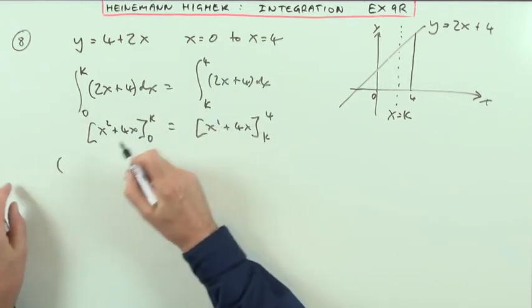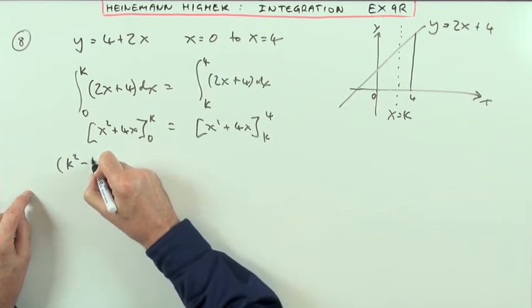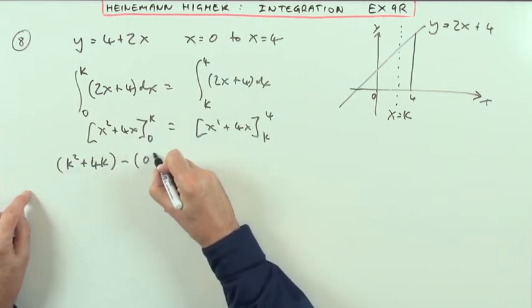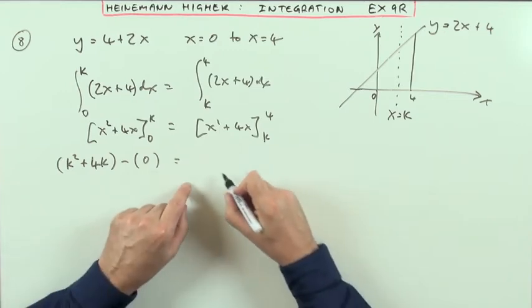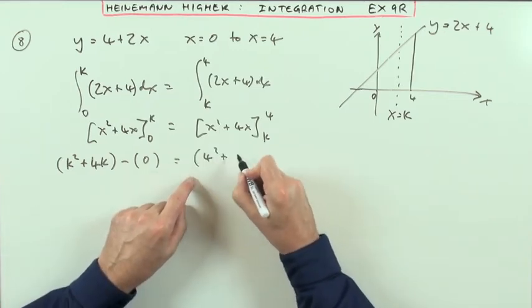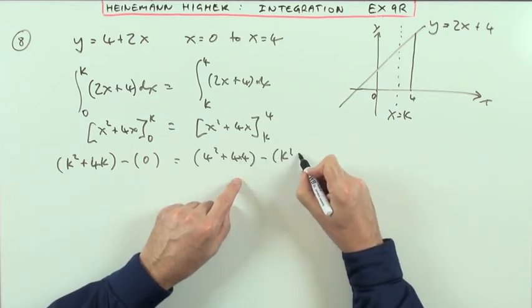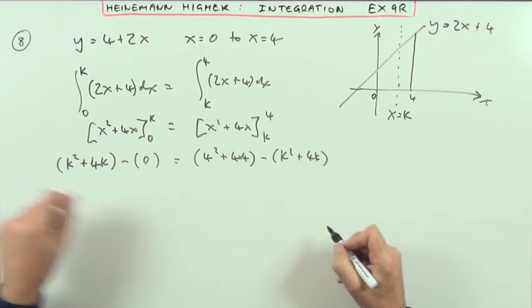So now work it out at k. I've got k squared plus 4k, I'll just put minus 0 for that side, and this side's going to be 4 squared plus 4 times 4 minus k squared plus 4 times k.